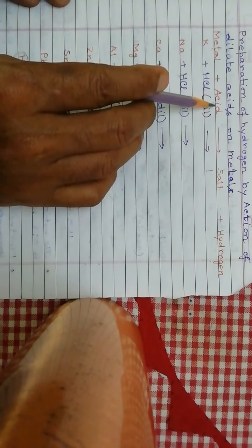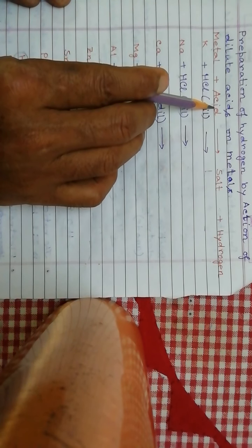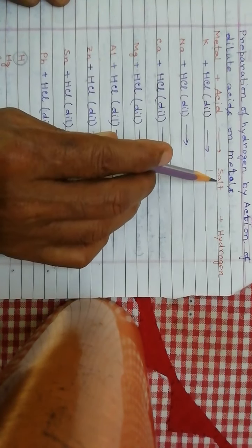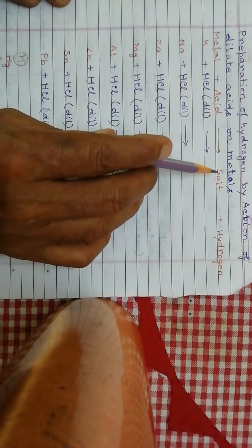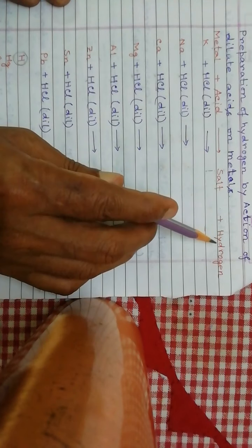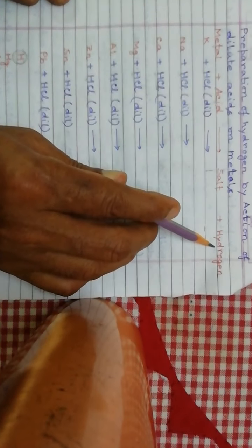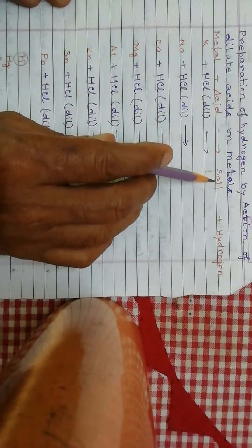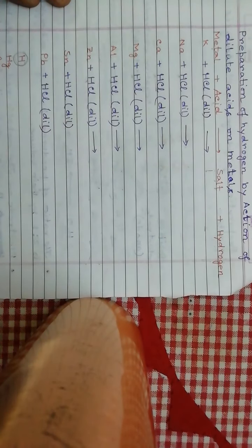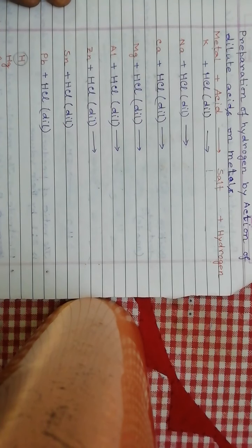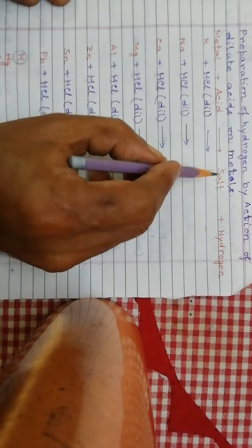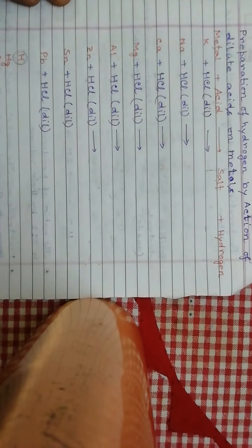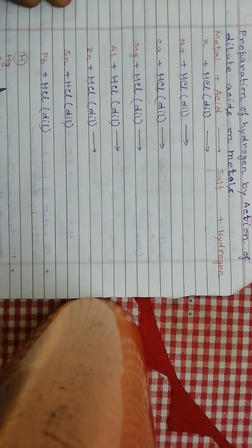When a metal reacts with dilute acid it forms a corresponding salt and hydrogen. The corresponding salt depends on which metal and which acid are used — these two factors determine what corresponding salt will be produced.